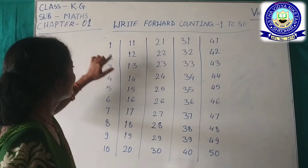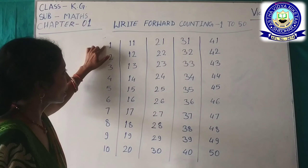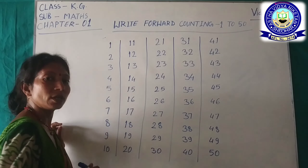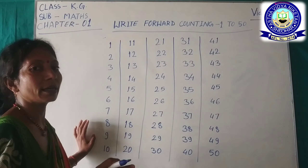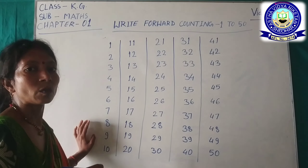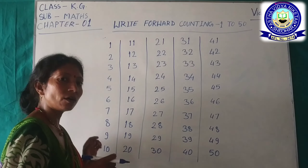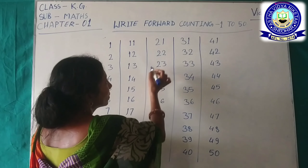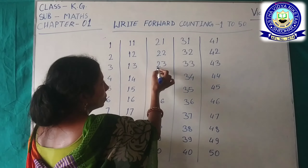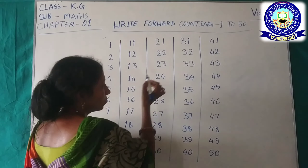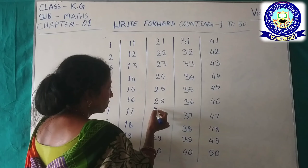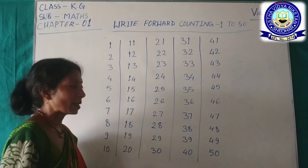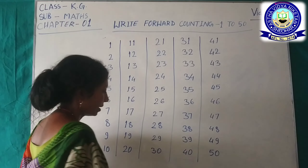So when you learn 2 from 1, this is why when you learn 9, you learn 2 from 1. So we will learn 200 from 100 to 100, we will learn very easily. And we will learn 2 from 1: 21, 22, 23, 24, 25, 26, 27, 28, 29, 30.